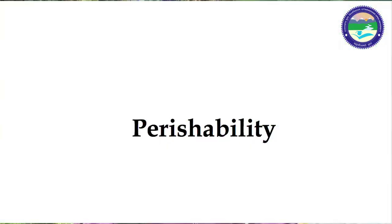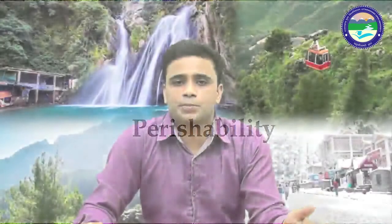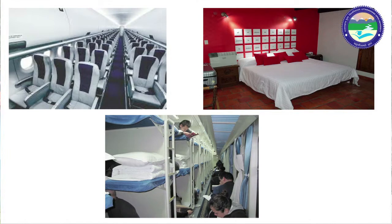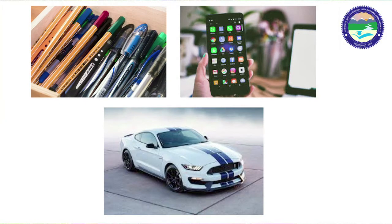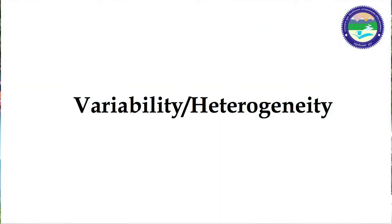The third important feature of tourism product is perishability. Perishability means we cannot store tourism products in any warehouse or use them in the future. If we don't use a product on the same day, we lose its value. For example, if some seats of airlines or some rooms of hotels are unbooked on a particular day, we lose that revenue. In contrast, tangible products like pens, mobile phones, or cars can be stored in a warehouse and resold another day. But with intangible products, if we lose demand on a particular day, we can never recover it.